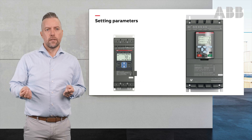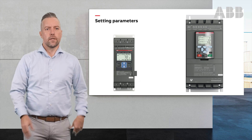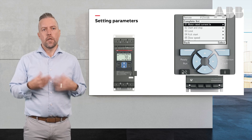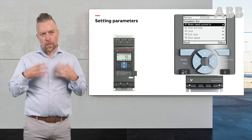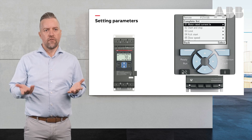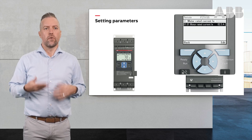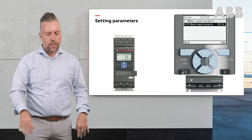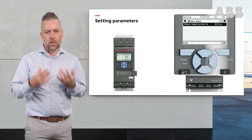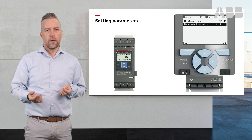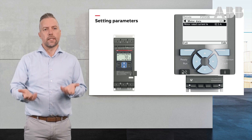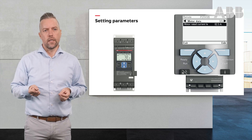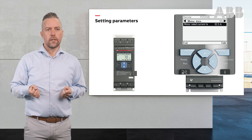For the PSTX you actually have two ways to do it. Either you go into menu, parameters, all parameters, and then the first one that comes up is the motor rated current that you select and change. You also get the option when you start up the soft starter — when you power up, you get to the basic setup, and there you will also have the possibility to set the motor rated current directly.